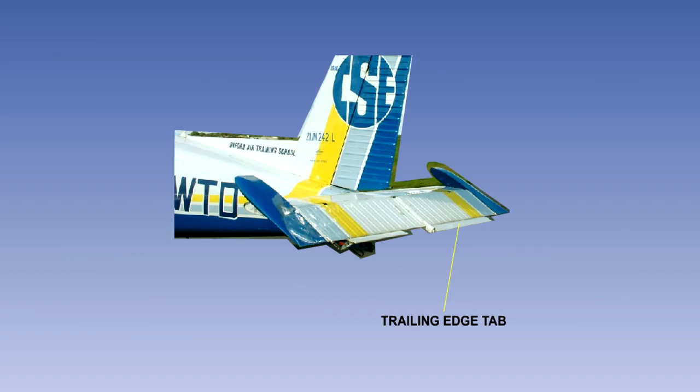These tabs are small aerofoil sections hinged at the trailing edge of the flying control surface. Their actual size will vary from aircraft to aircraft. We will now take a look at each of these tabs in greater detail.